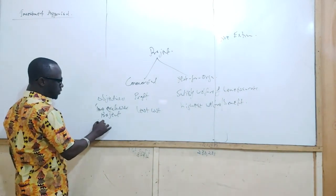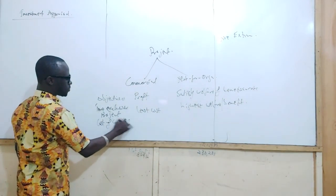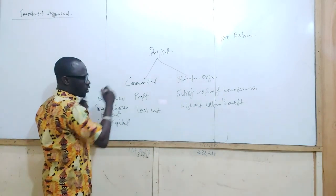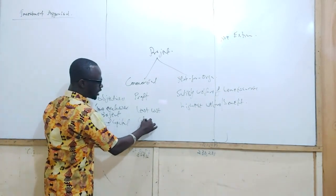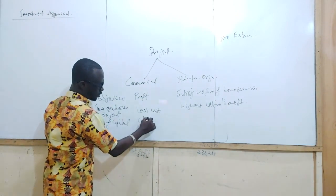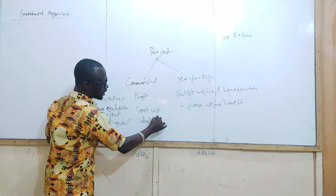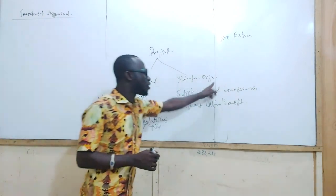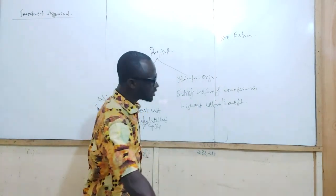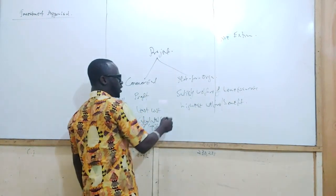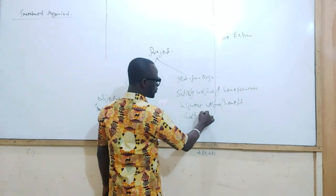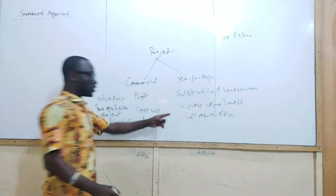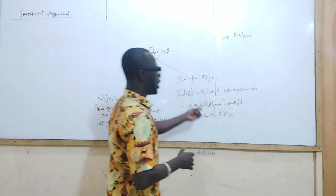The third distinction is about the discount factor or cost of capital used. When it comes to commercial companies, they would usually calculate their own cost of capital, and that is what they use to appraise their projects. But when it comes to not-for-profit organizations, especially public sector organizations, they use the government's required rate of return, because they are not there to make profits.